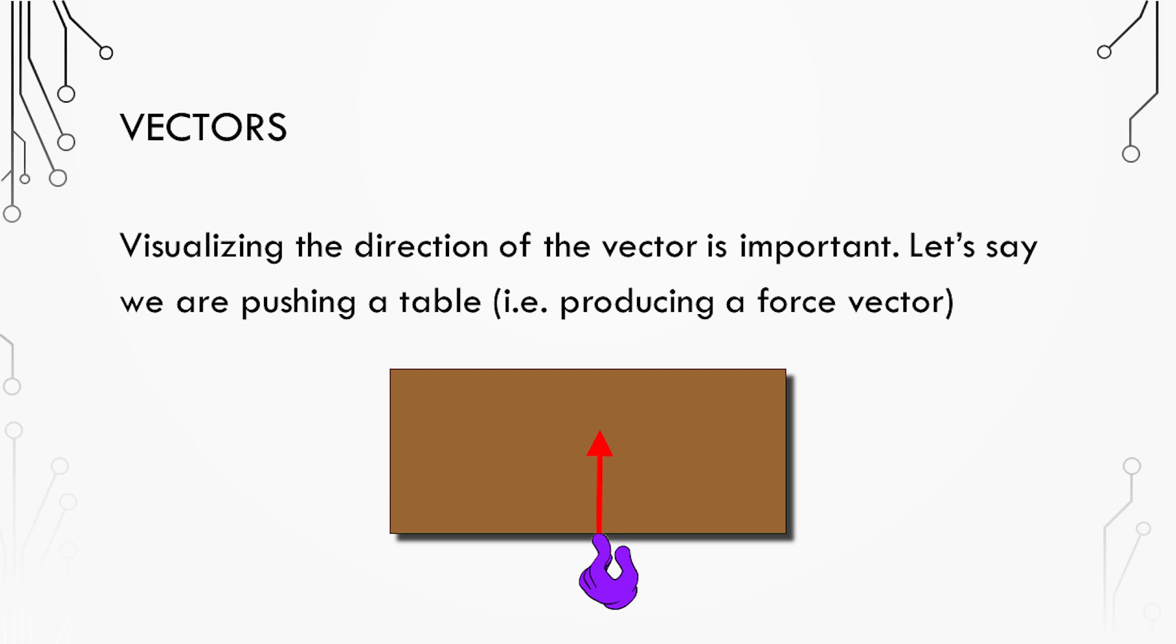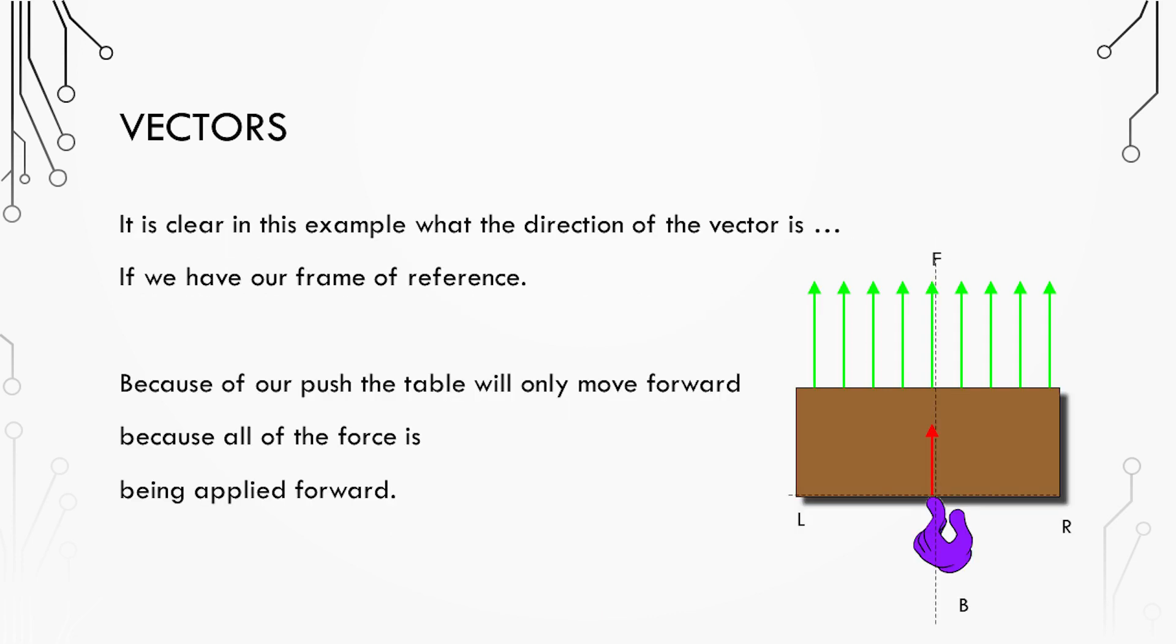Visualizing the direction of a vector is important. Let's say we're pushing a table so producing a force vector and in this example the vector is going to be moving forwards. If we look at our frame of reference in the image we have left and right and forward and backward. Since the force is only acting forward the table should only move forward.